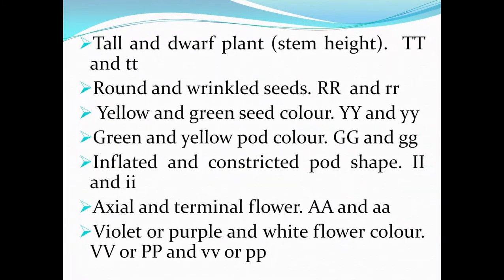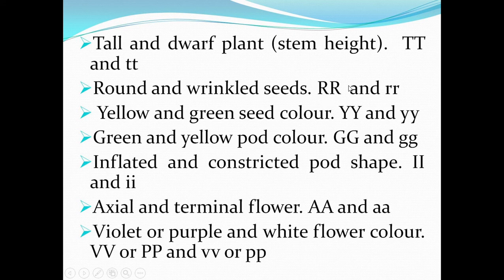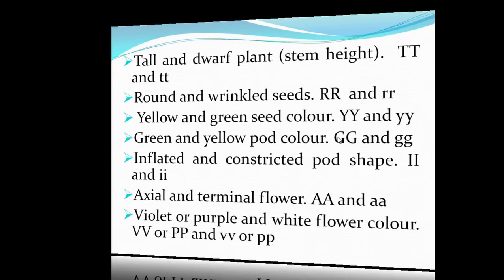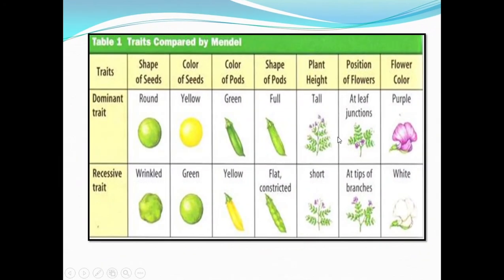For his experiments he selected visible characters like tall/dwarf and round/wrinkled. Each trait is represented with a particular alphabet — capital letters are used for the dominant trait and lowercase letters are used conventionally for the recessive traits.